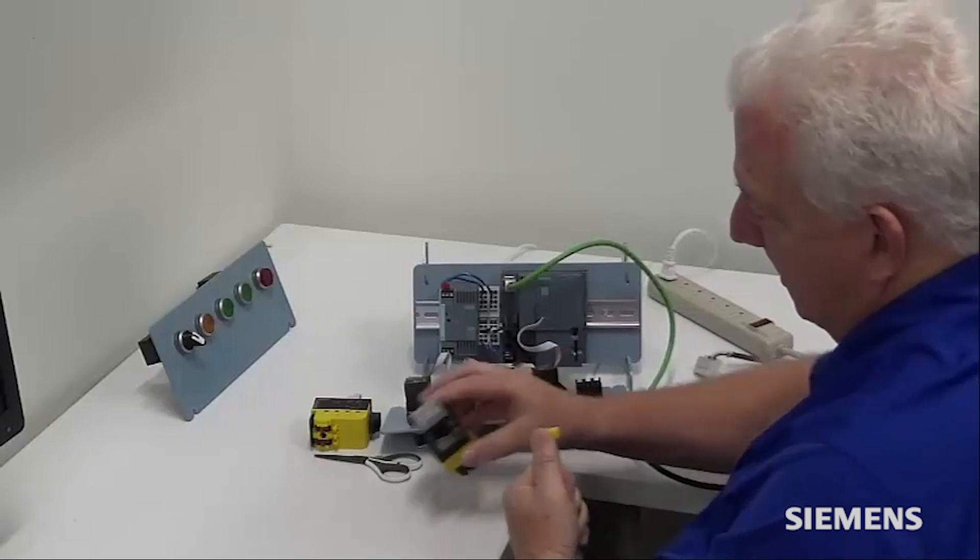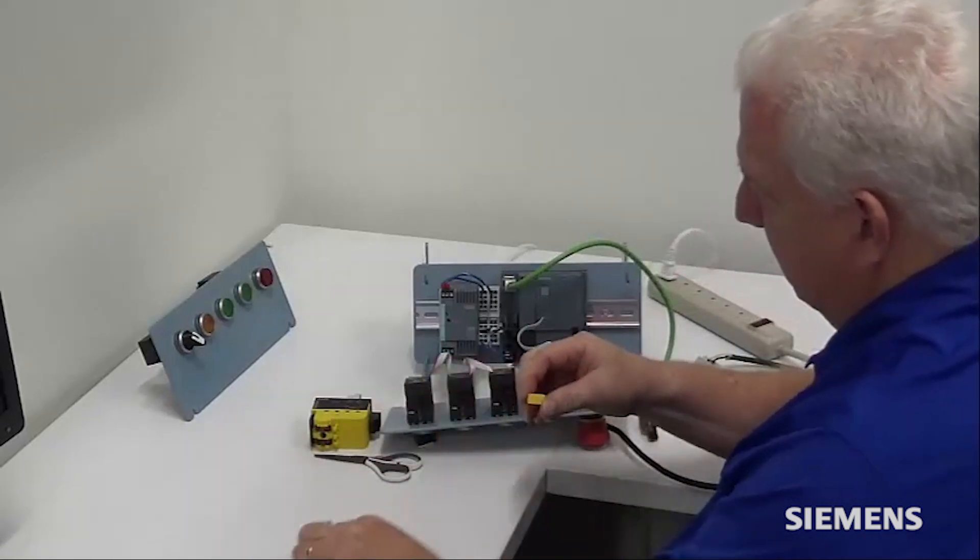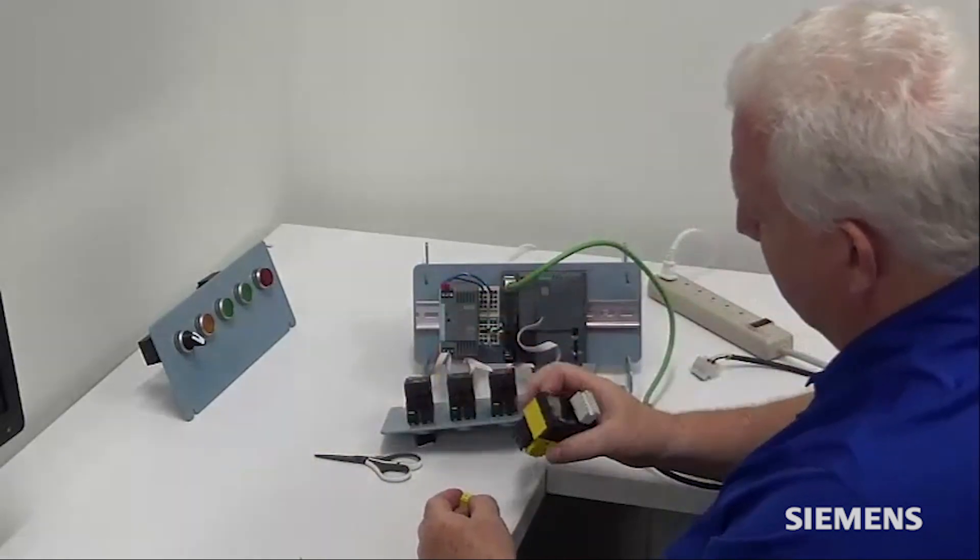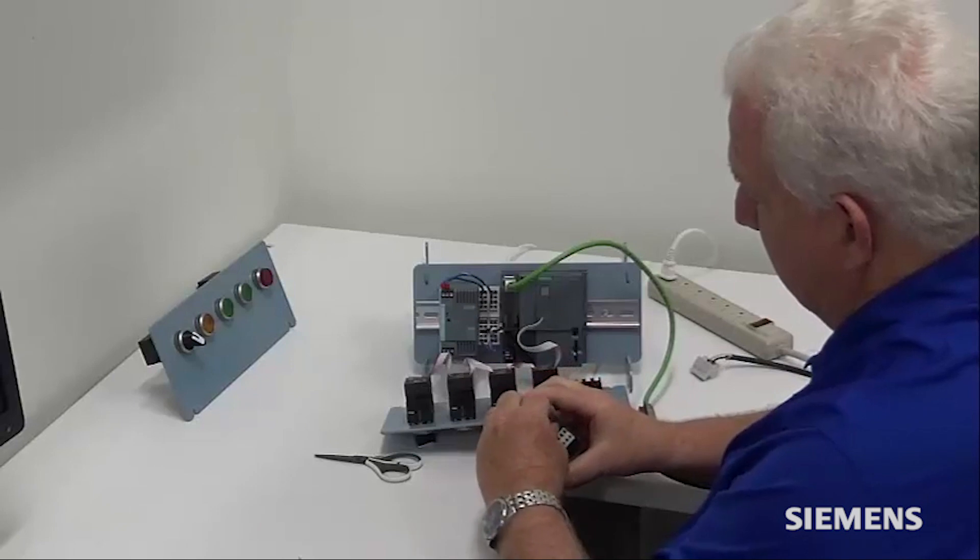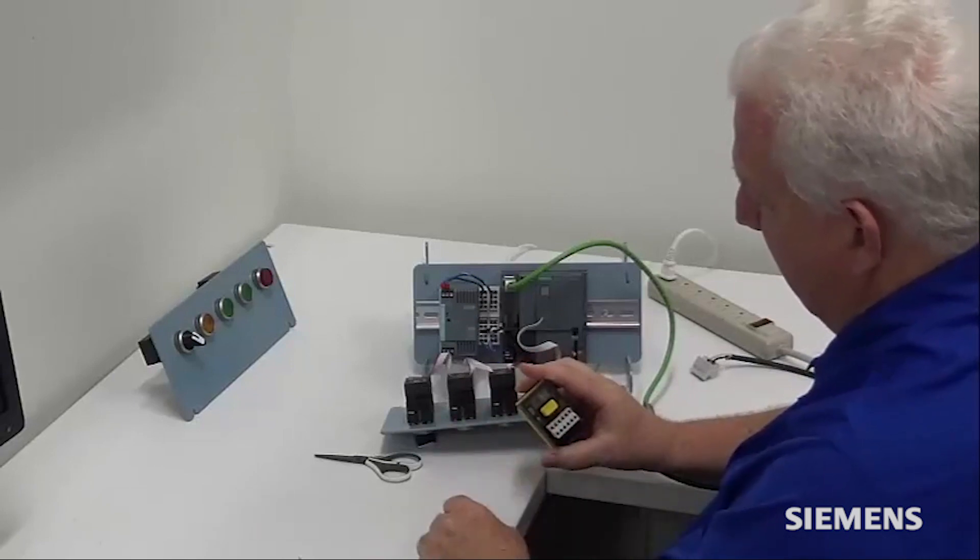Discard your old module, bring the new module in and now insert your EEPROM module into the back of it.